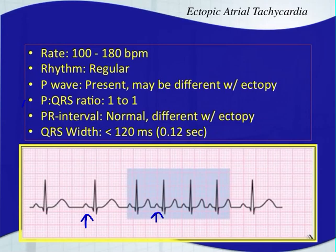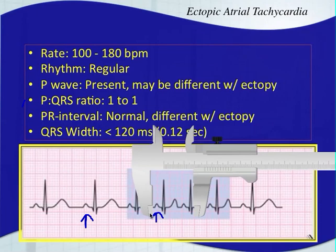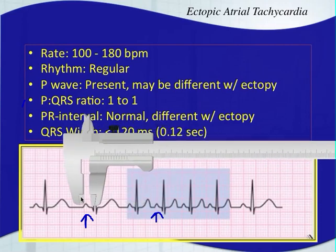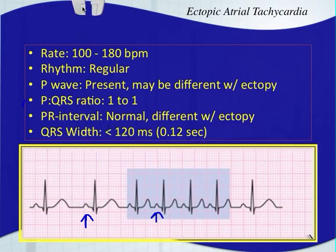The P to QRS ratio is still going to be one to one — you have one P wave for every QRS complex. Your PR interval is still going to be normal, but it's going to be a different PR interval with the ectopy. The spacing for this PR interval is going to be different than over here — the tachycardia is going to have a different PR interval, and that's how you know it's an ectopic atrial foci. Somewhere else in the atria, either the right or left atrium, is causing depolarization to take over. Your QRS width is still going to stay narrow, less than 120 milliseconds which is three small boxes.